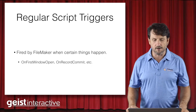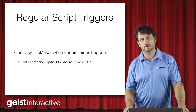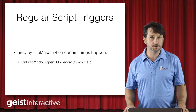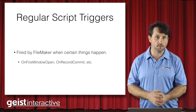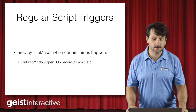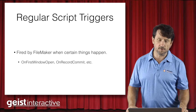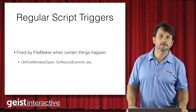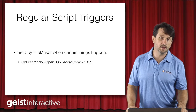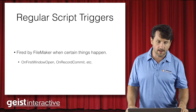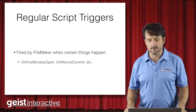Just some background. Regular script triggers — we know what these are. These are the hooks that FileMaker gives us to run scripts when certain things happen. For example, when the first window of a file opens, you can attach a script to that and it will run — that's the on first window open script trigger. There are also script triggers for things like record committing, record loading, entering a layout, leaving a layout, and keyboard keystrokes. There's a whole bunch of script triggers that FileMaker gives us.